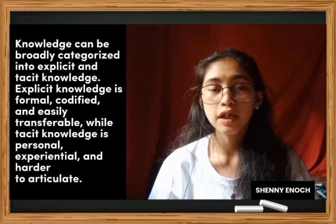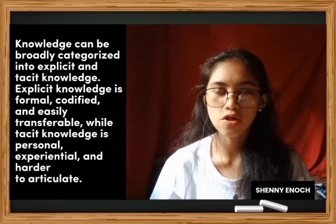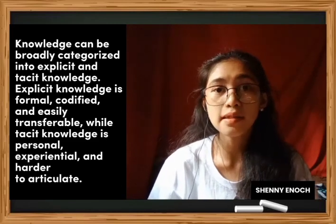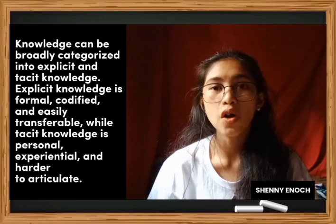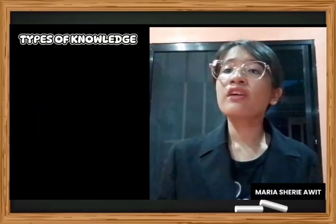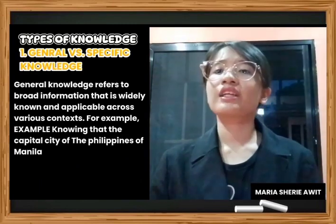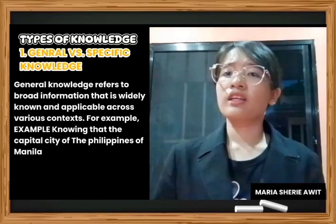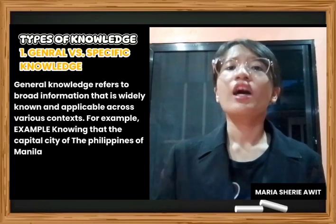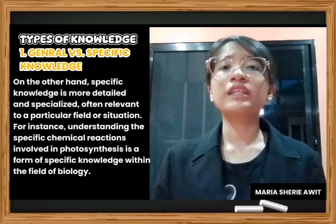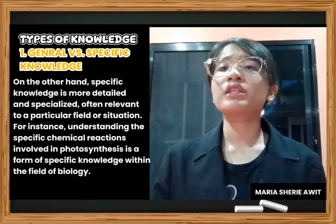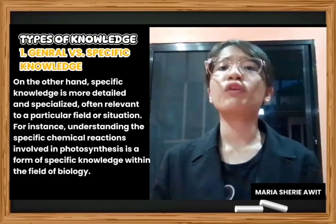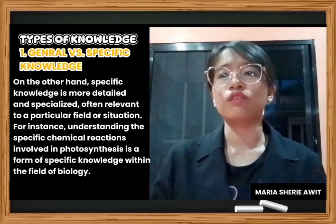Knowledge can be broadly categorized into explicit and tacit knowledge. Explicit knowledge is formal, codified, and easily transferable, while tacit knowledge is personal, experiential, and harder to articulate. General knowledge refers to broad information widely known and applicable across various contexts — for example, knowing that the Philippines' capital city is Manila. Specific knowledge is more detailed and specialized, often relevant to a particular field, such as understanding the chemical reactions involved in photosynthesis.